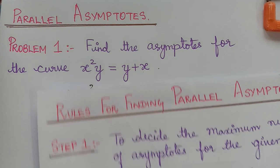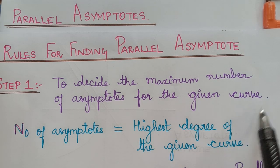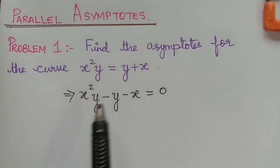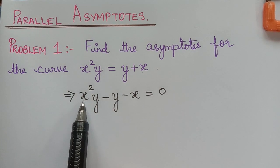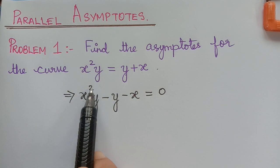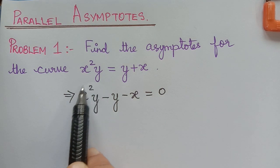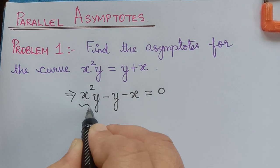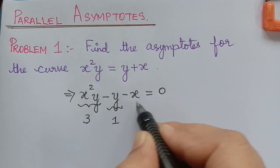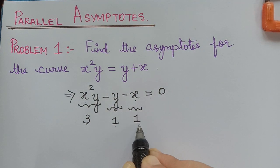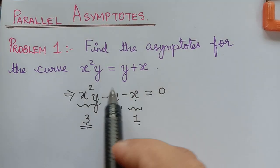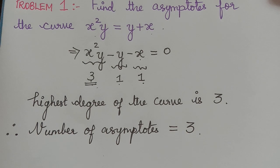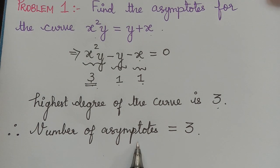The first step is we have to decide the maximum number of asymptotes for the given curve — the number of asymptotes will be equal to the highest degree. For this curve, if you check the first term, the degree of x is 2 and the degree of y is 1. We add the powers of both terms to get the degree of this term: 2 + 1 = 3. So the degree of x²y is 3, the degree of y is 1, and the degree of x is also 1. The highest degree is 3, so the given curve has a maximum of 3 asymptotes.